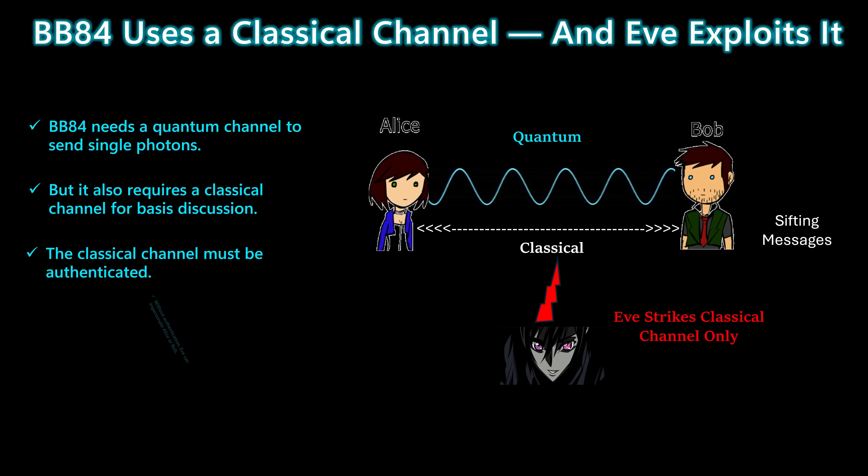This classical communication has to be authenticated, because if it isn't, Eve can intercept it, alter it, or even impersonate Alice or Bob. The quantum channel itself may be secure, but the classical channel is where the man-in-the-middle attack begins.